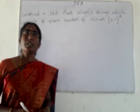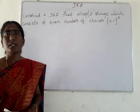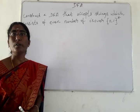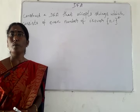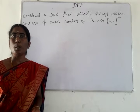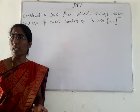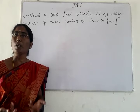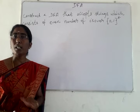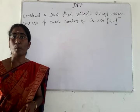Hello friends. Today we will see how to construct a DFA that accepts strings which consist of an even number of zeros. There is no restriction for the number of ones — the number of ones may be even or odd. Only the string must consist of an even number of zeros.